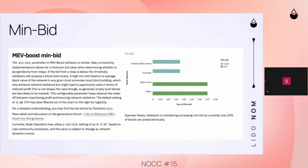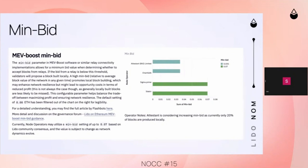A new topic this quarter is the min bid. The min bid is a setting on MevBoost where node operators can choose to produce a block locally if the value of that block is below a specific value — that specific value being the min bid setting. For example, Attestant is considering increasing their min bid, but currently it's at 0.035 ETH. So if the rewards for a specific block are below 0.035, they will opt to produce that block locally instead of getting it from a relay. This is a great way to bypass the relays and is really good for censorship resistance.